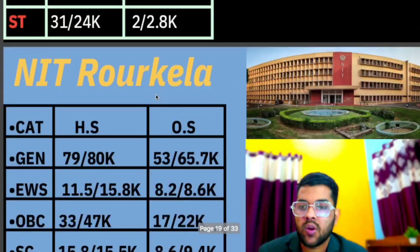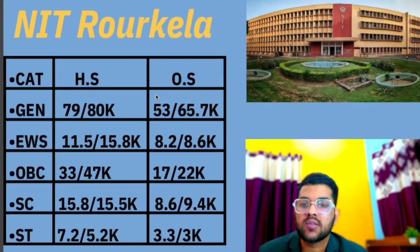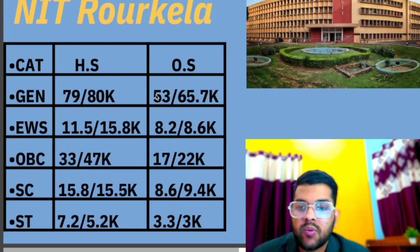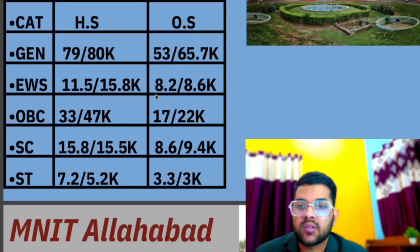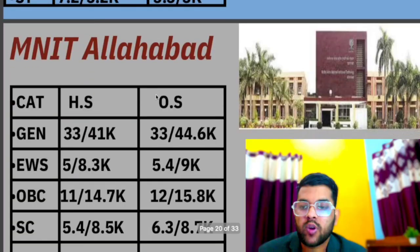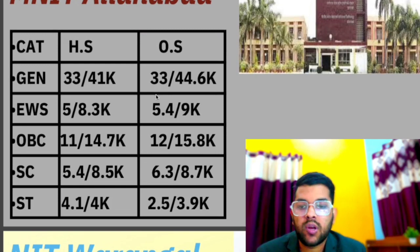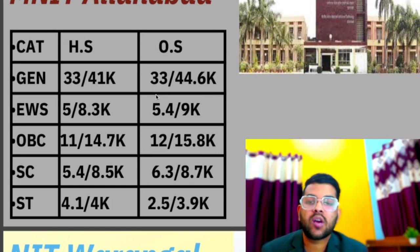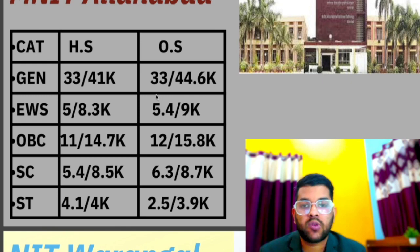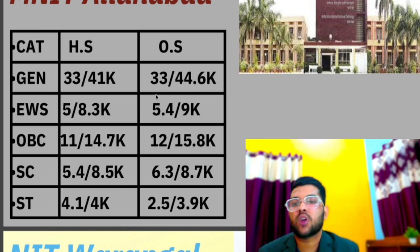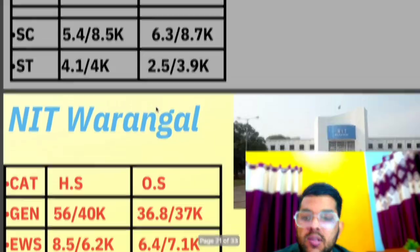For NIT Calicut: general 40,600, EWS 55,900, OBC 12,400, SC 6,400, ST 2,000 — for other state. For NIT Rourkela: general 53,000, EWS 8,200, OBC 17,000, SC 8,600, ST 3,300. For MNIT Allahabad: general 33,000, EWS 5,400, OBC 12,000, SC 6,300, ST 2,500. These are the JoSAA counseling 2022 closing ranks with the lowest possible branch.